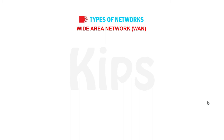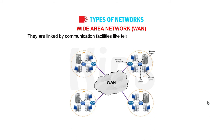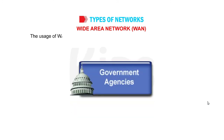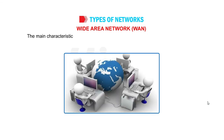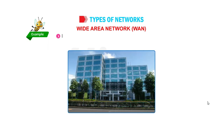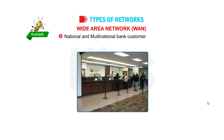Wide Area Network, WAN. This kind of network connects two or more computers located at distant places. They are linked by communication facilities like telecommunication or satellite signals. The most common example of WAN is the telecom system. The usage of WAN is limited to very large organizations and government agencies. The main characteristic of WAN is that it requires public telecommunication media to transfer data. The best examples of WAN are the Internet, Intranet in large multinational companies, ATM facilities, and national and multinational bank customer services.